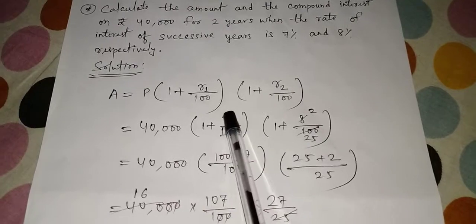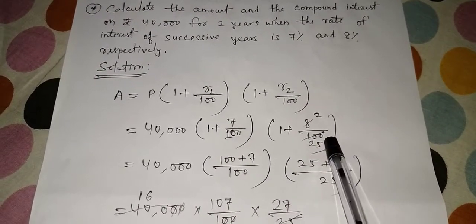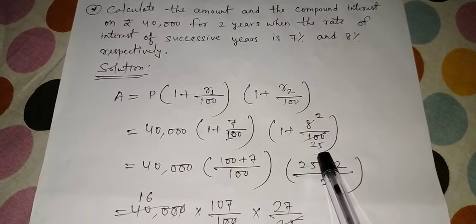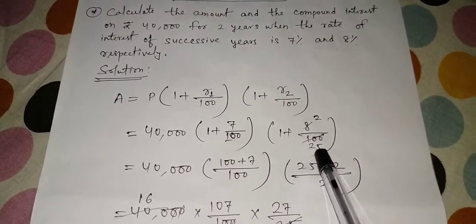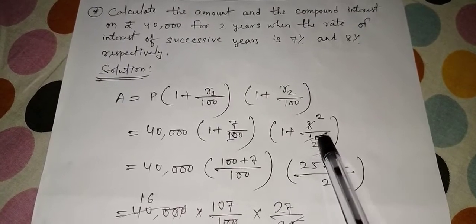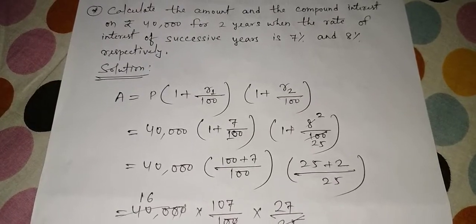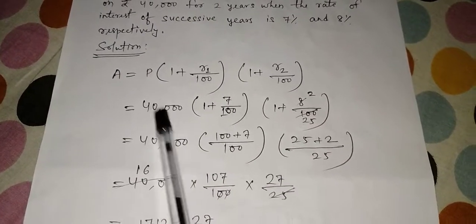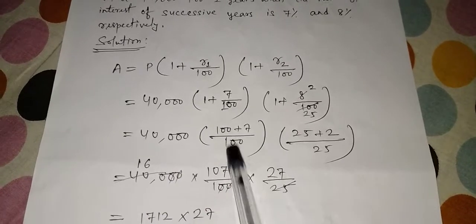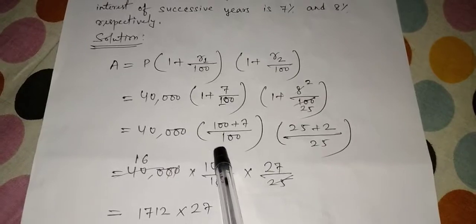That is r2. And after that what you do? As 7 and 100 cannot be cancelled, now you cancel 8 and 100. When you cancel 8 and 100, you can cancel with 4. 4 twos are 8, 4 twenty-fives are 100. 4 twos are 8 and 4 fives are 20, so that way 25 comes here. So now after that what you do? 40,000 you write same, here you do LCM.